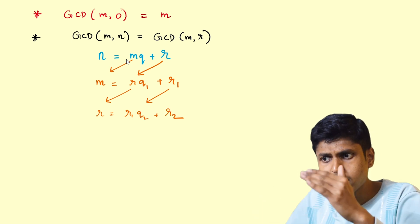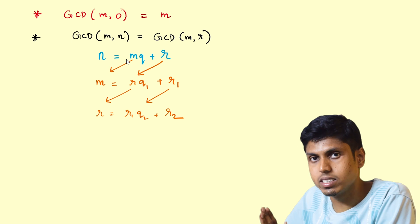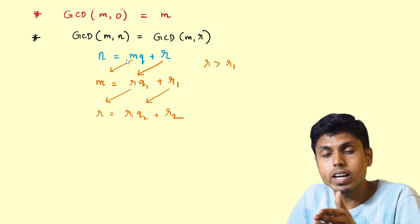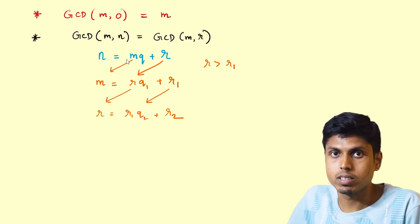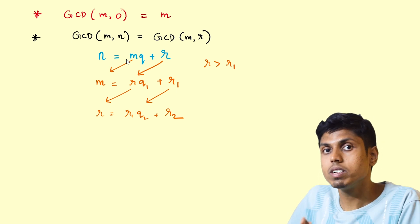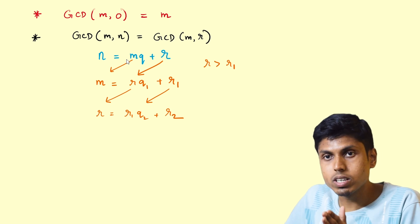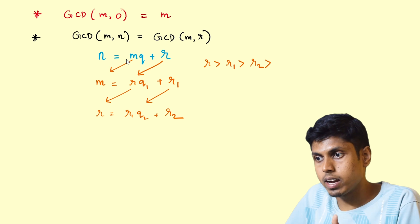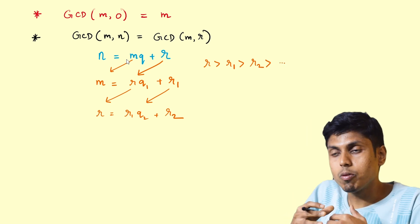If you perform this again and again, clearly the remainder is strictly a decreasing sequence. You could see that r is greater than r1 because r1 is the remainder obtained when m is divided by r. We know that remainders are always less than the divisor, so this r1 is lesser, and r2 is far lesser than r1.